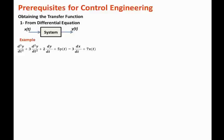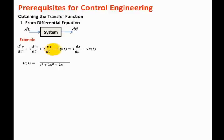What we need to do is replace every nth derivative term with s to the n. So h of s, the transfer function, will have the denominator containing the output derivative terms. The third-order derivative becomes s cubed, plus 3 times s squared for the second derivative, plus 2s for the first derivative, and plus 5 for the zeroth derivative.